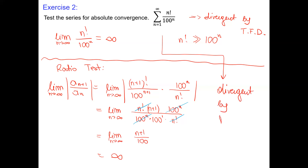By the ratio test, the series is divergent. If we have to list at least two tests that prove divergence, it would be the test for divergence — the n-th term divergence test — or the ratio test.